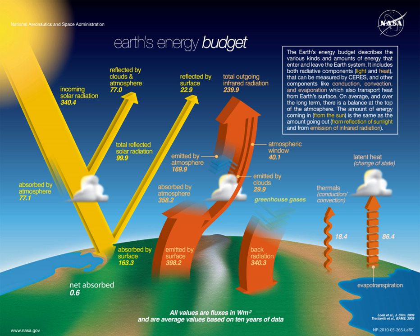Received radiation is unevenly distributed over the planet, because the Sun heats equatorial regions more than polar regions. The atmosphere and ocean work nonstop to even out solar heating imbalances through evaporation of surface water, convection, rainfall, winds, and ocean circulation.